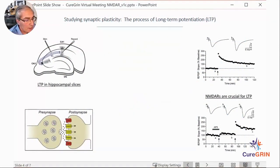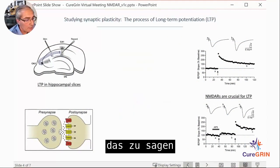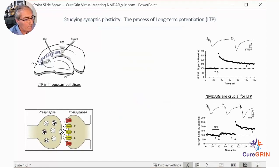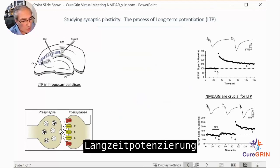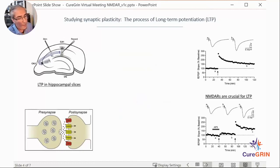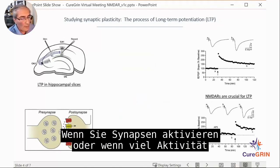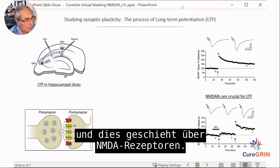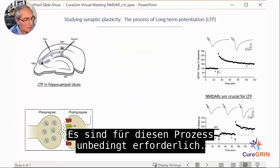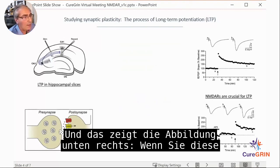The way we can study the process of synaptic plasticity or long-term potentiation is using model brain slices. When you activate synapses — when there's a lot of activity happening — that can actually potentiate the strength of the synapse. This is done via NMDA receptors, which are absolutely required for this process, as shown in the figure on the lower right.